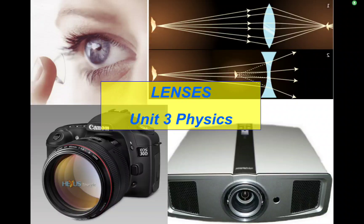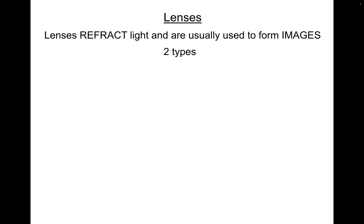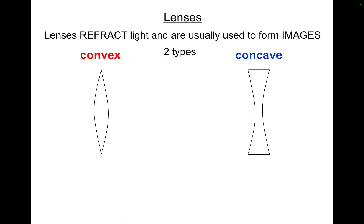Hi there, this is GCSE Waves Lesson 11 and this one's lenses. So lenses refract light and are usually used to form images. There are two types of lenses that you need to know about: the first one's a convex lens, and the second one's a concave lens.